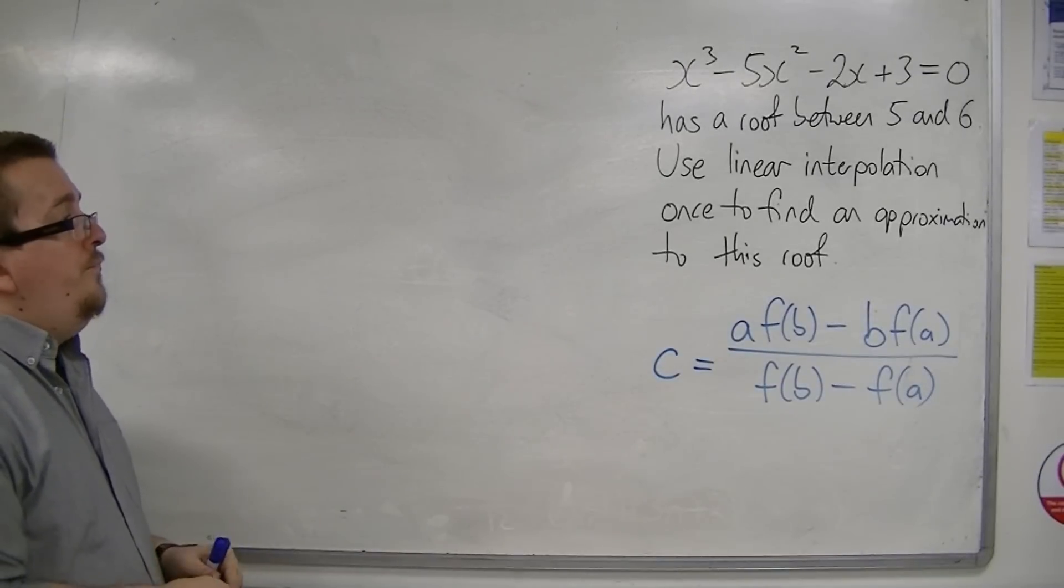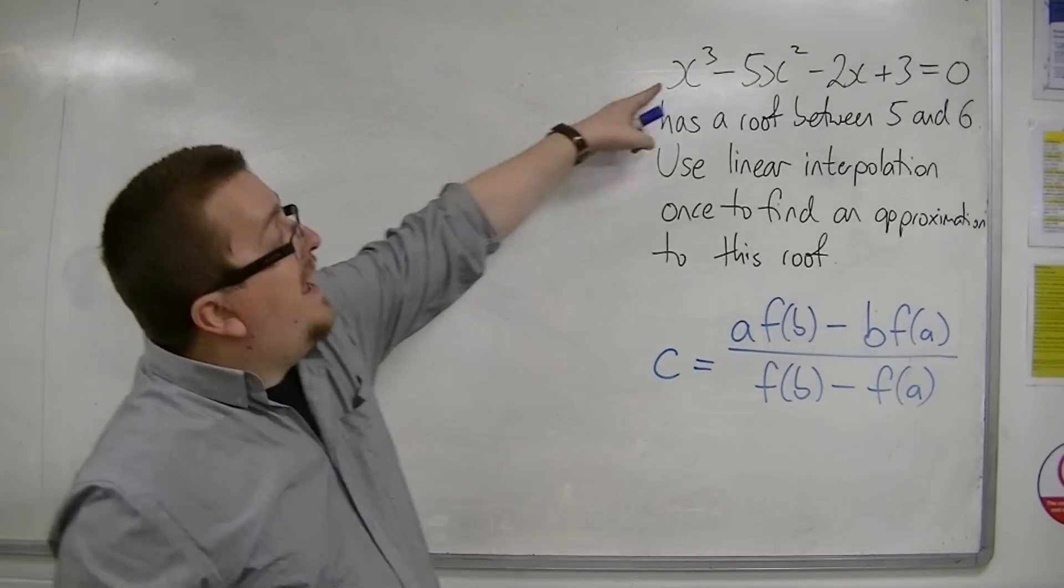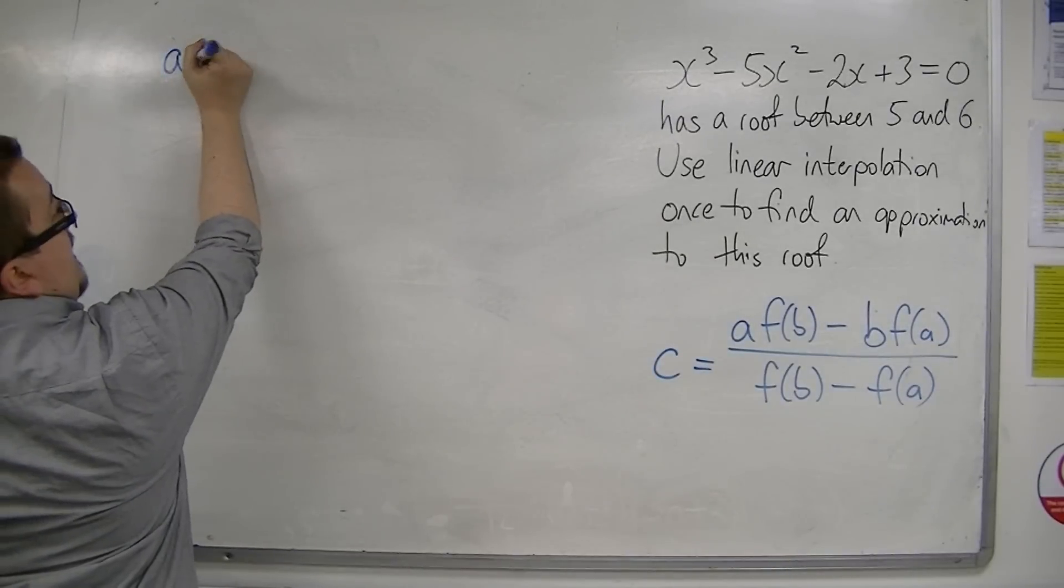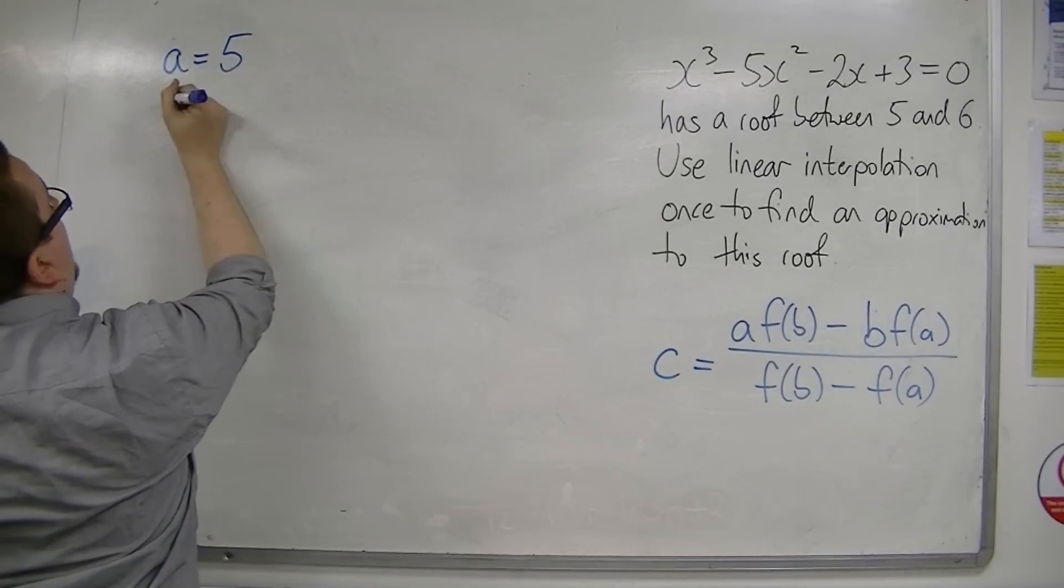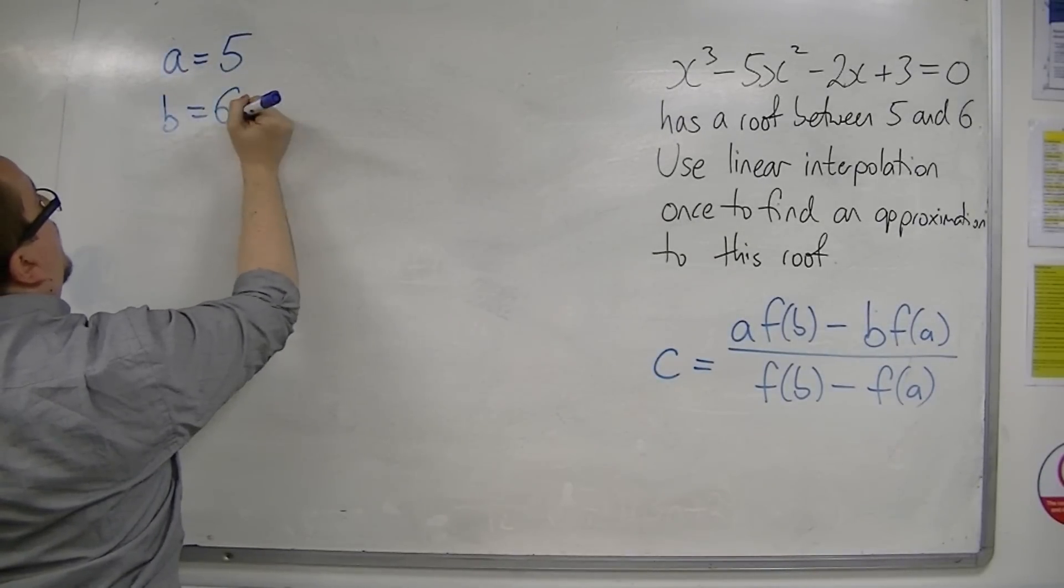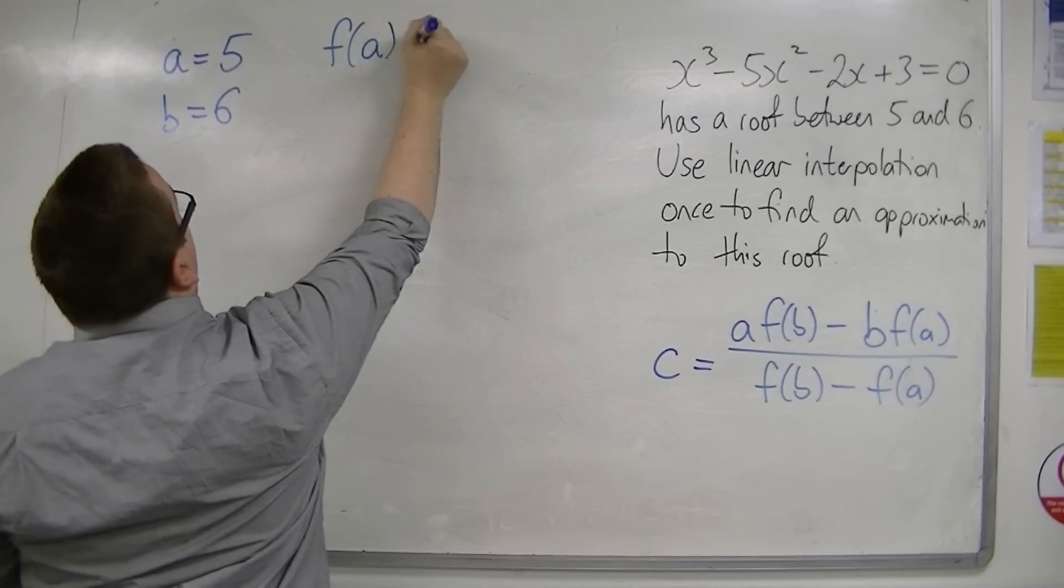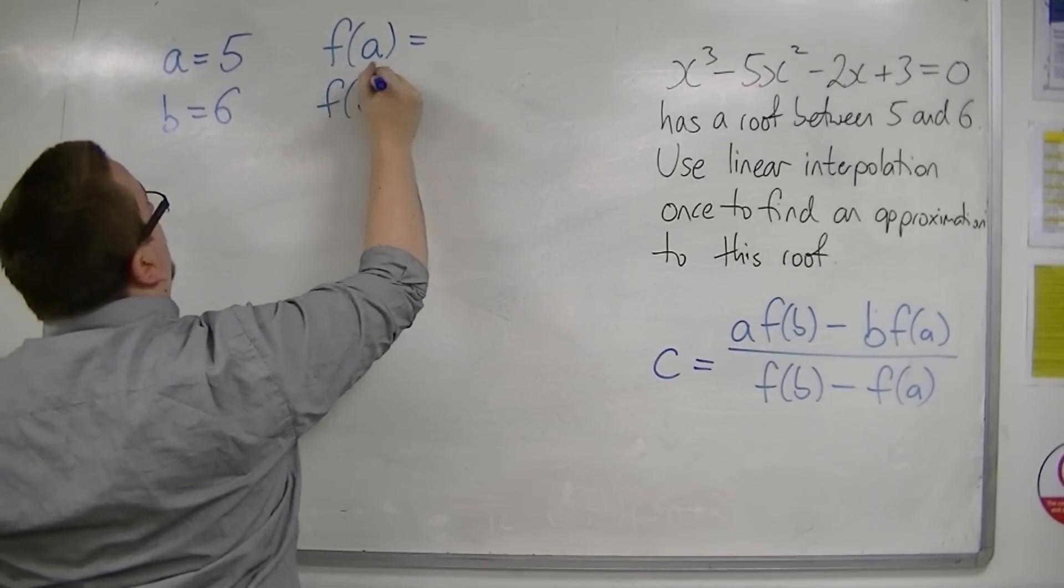So f of x is the x cubed minus 5x squared minus 2x plus 3, so I'm going to say that a is equal to 5 and b is equal to 6, so I want to find out what f of a is equal to and what f of b was equal to.